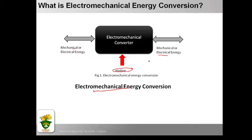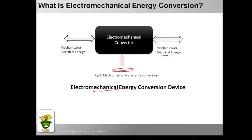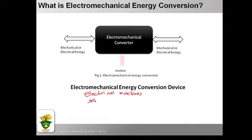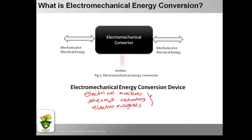We also have electromechanical energy conversion devices. Examples include electrical machines, solenoid actuators, actuators, and electromagnets. These are all considered electromechanical energy conversion devices.